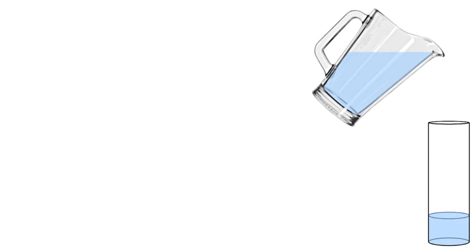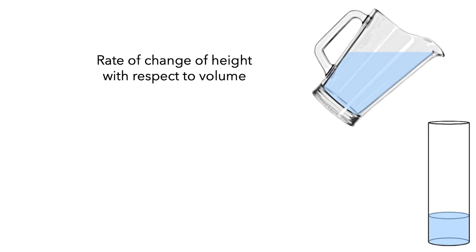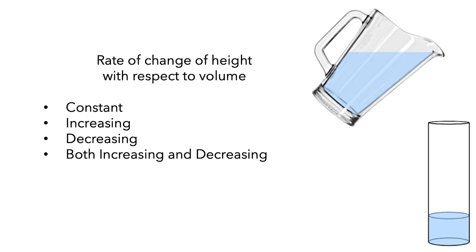As you watch the animation, think about the relationship between the height of water in the cup and the volume of water that is added to the cup. In particular, you'll need to determine whether the rate of change of height with respect to volume is constant, increasing, decreasing, both increasing and decreasing, or something else.